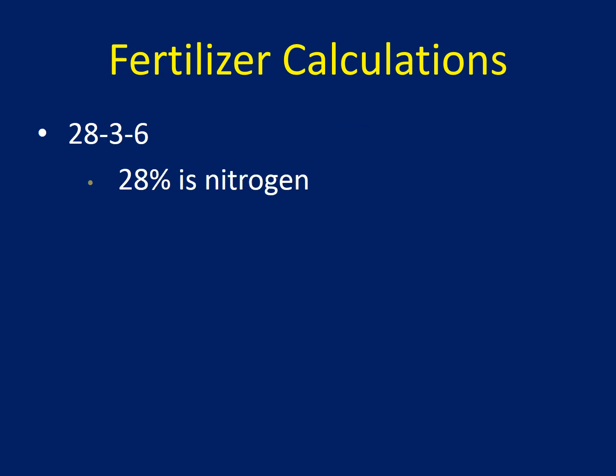The first thing we need to identify is what those numbers mean on the fertilizer bag. The 28 refers to the amount of nitrogen, the 3 represents the relative amount of phosphorus, and the 6 represents the relative amount of potassium present in that fertilizer. So in this case we're looking at nitrogen, and the 28 means there's 28% nitrogen in that fertilizer.